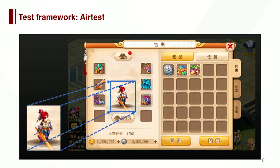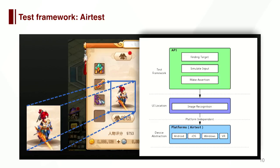We have two underlying test frameworks. The first is the AirTest framework. It uses image recognition technology to locate UI elements, and then uses device APIs to perform simulated input. We provide users with simple test APIs like simulated input and make assertion. We have an underlying abstract layer of platform API that unifies simulated input APIs of different platforms, so users can run their script on different platforms like Android, iOS, Windows, and VR.